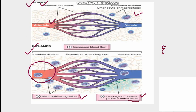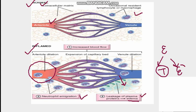Edema can be of two types: transudate and exudate. Transudate occurs when only fluid leaves the blood vessels and enters the extracellular matrix. Exudate occurs when plasma proteins and cells also leak along with the fluid. In acute inflammation, you will always find exudate type of edema.